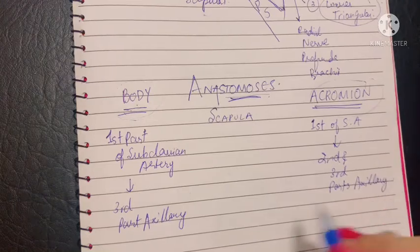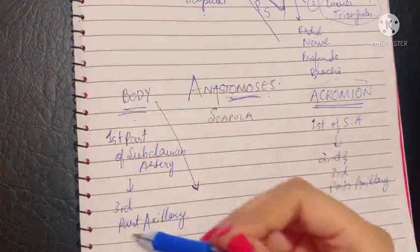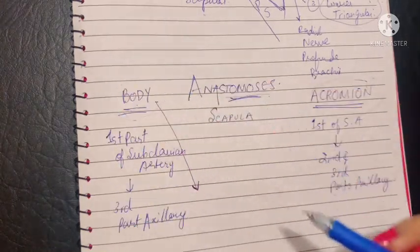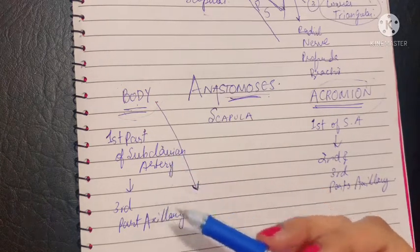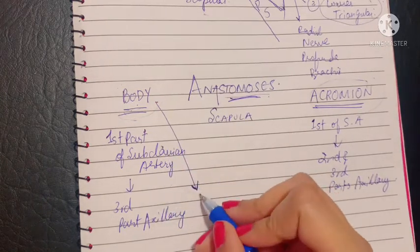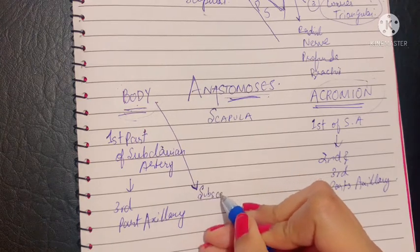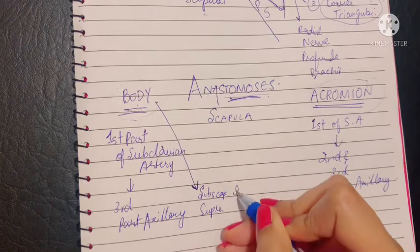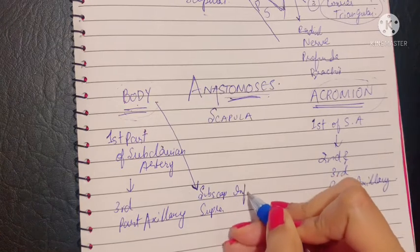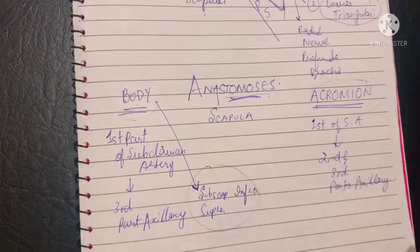What are the various vessels constituting the body anastomosis — taking part in the anastomosis around the body of the scapula? This includes the subscapular, the supraspinous, and the infraspinous fossas. These are the fossas where the body anastomosis of the scapula is occurring.